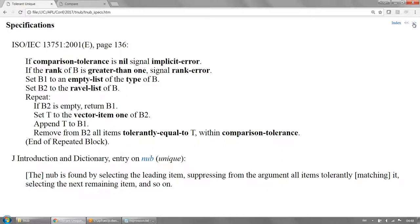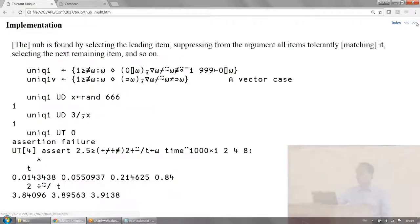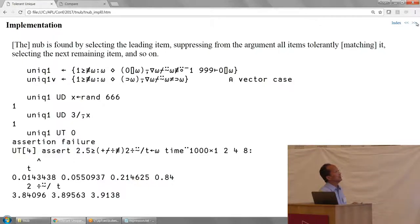The ISO definition only works for vectors and scalars. You can see here it does unravel, but the J definition works on any rank array. In J the word item means major cell. I claim that the J definition is easier to understand so we're going to use it instead of the ISO definition. They're the same on vectors and scalars.